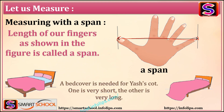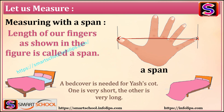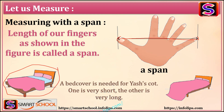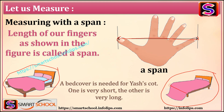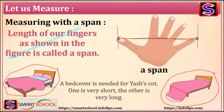Let's see how we can measure with our span. A bed cover is needed for a cot. One bed sheet is too short and another is too long — you can see this in the picture. We want the exact length of the bed, so what do we have to do?